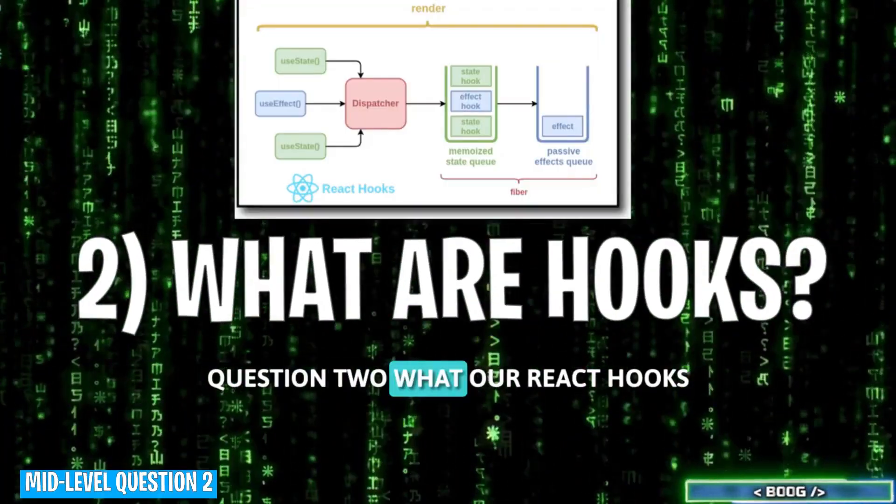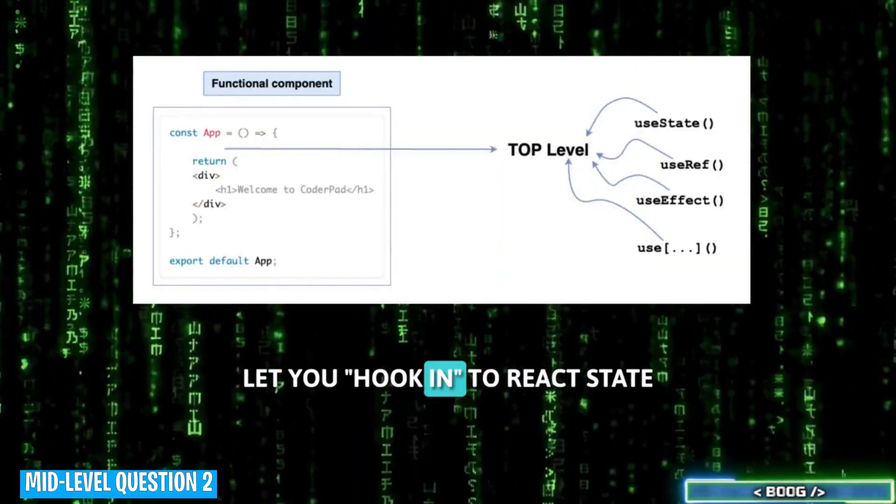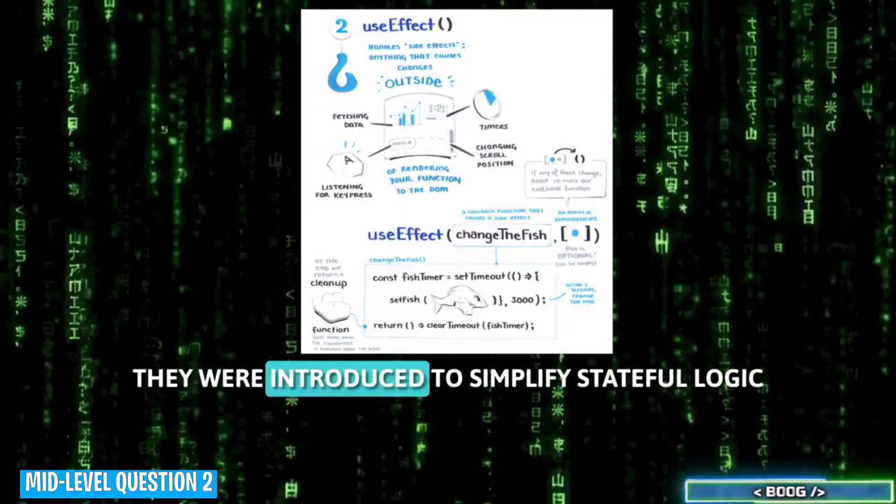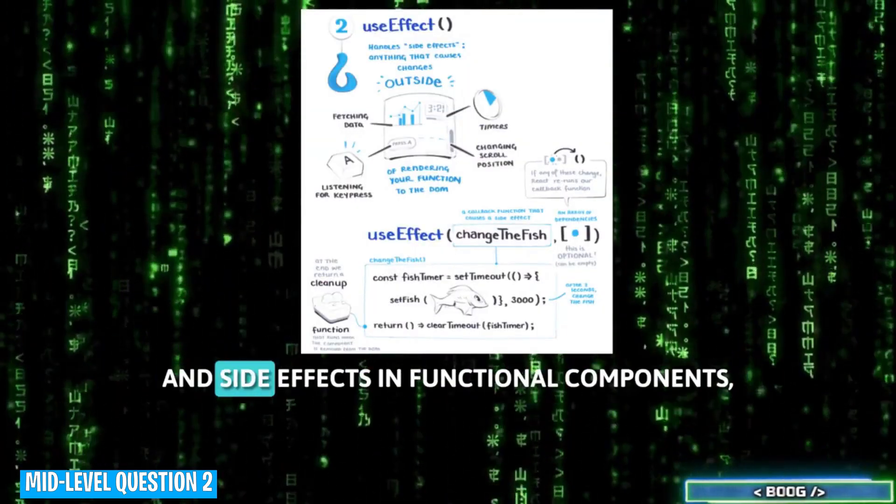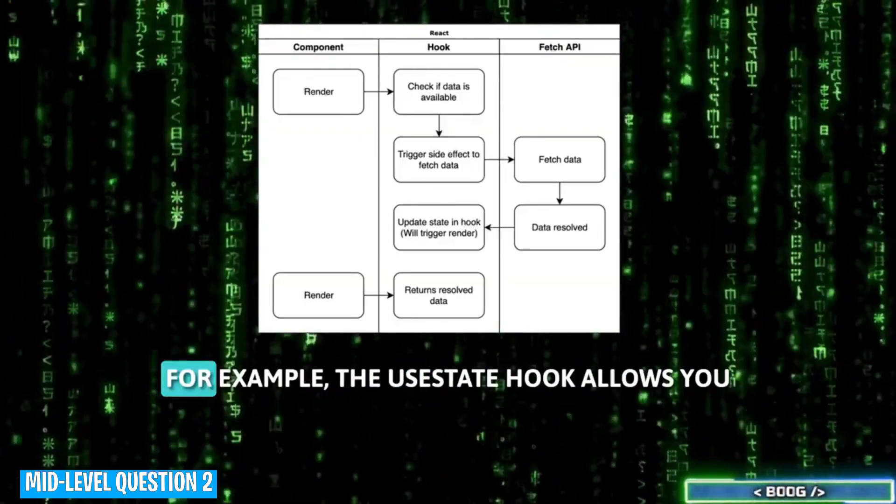Question 2. What are React hooks and can you give examples on how you might use them? React hooks are functions that let you hook into React state and lifecycle features from functional components. They were introduced to simplify stateful logic and side effects in functional components, making them as powerful as class components. For example,